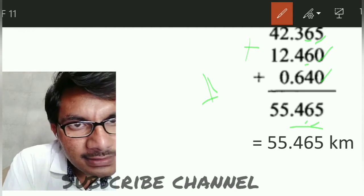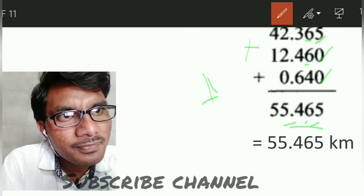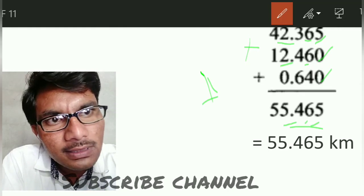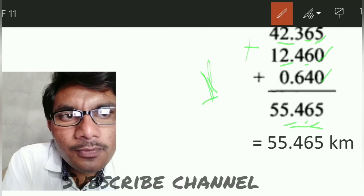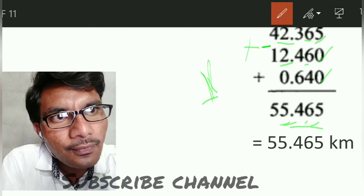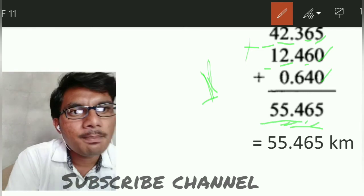The decimal point shifts as is to the result. Now continuing: 2 plus 2 plus 0 equals 4, plus 1 carry equals 5. Finally, 4 plus 1 equals 5. We get 55.465 kilometers.